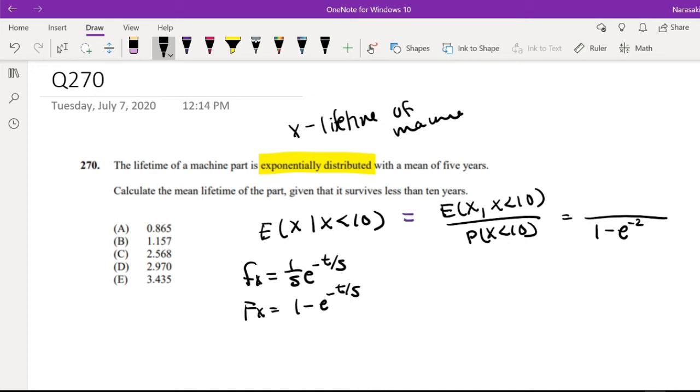Now for the expectation. I'm going to compute the numerator part. The expectation of X given X is less than 10 is equal to the integral from 0 to 10 instead of 0 to infinity.